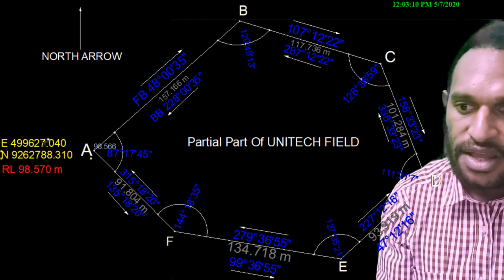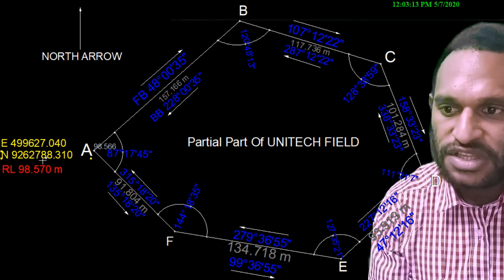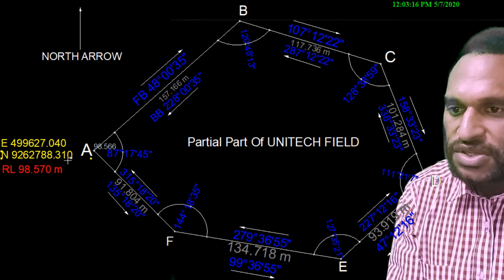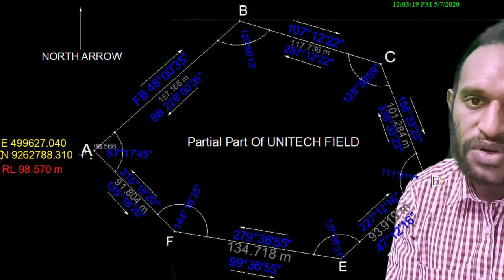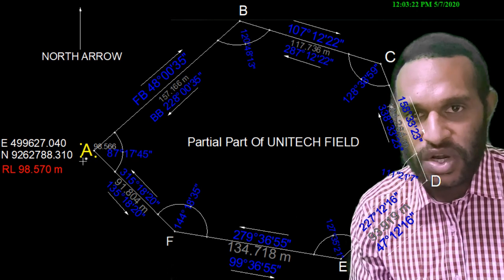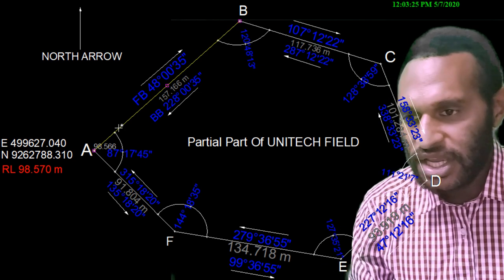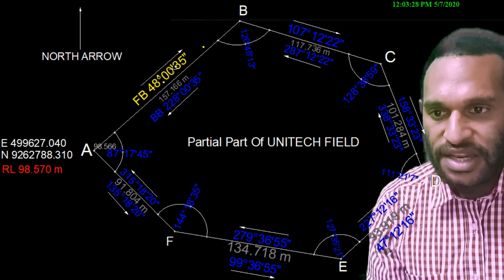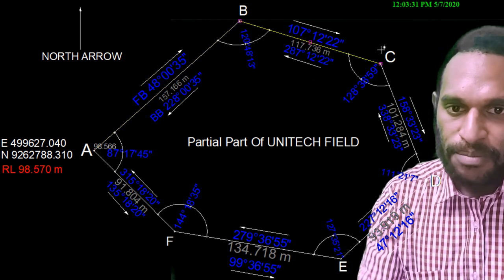The coordinates of point A are: eastings 499627.040, northings 9262788.310. This is the known coordinate that we have. We will use this coordinate to transfer and identify the coordinates of point B and point C.